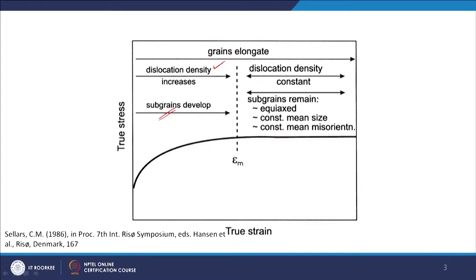The sub-grains also remain equiaxed, more or less, with constant mean size and constant mean misorientation. So there is not much change in the microstructure either — it has reached a steady state condition. When you have this kind of condition, we say that the material is deforming through the dynamic recovery process, which is the prominent process in this particular segment.